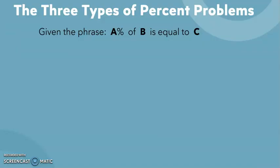You're going to start off with this phrase: A percent of B is equal to C. And this A represents the percent, B is the whole that you're going to take a percent of, and C is the part that you're going to find.